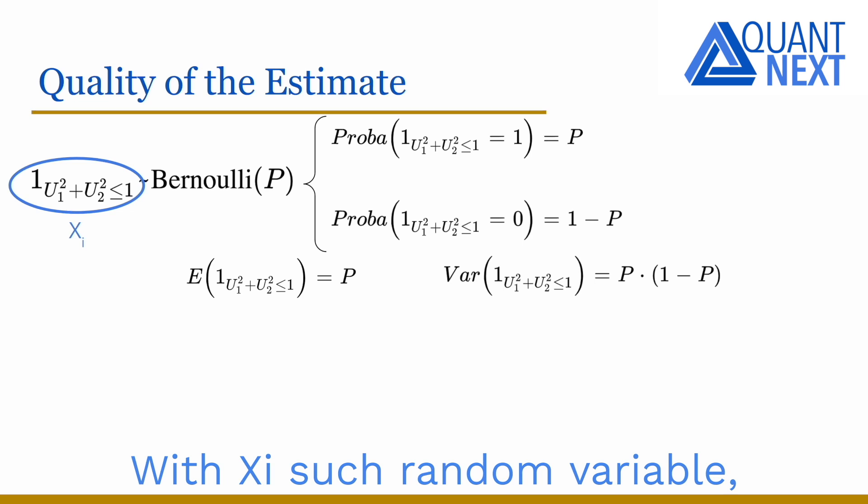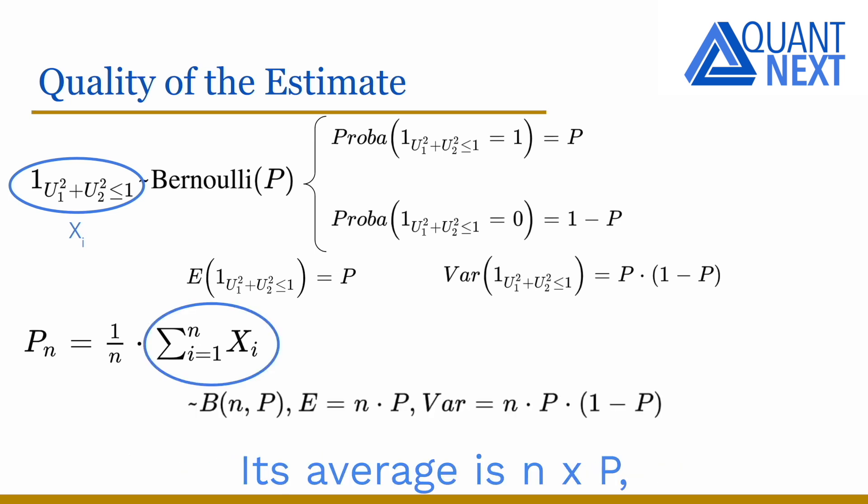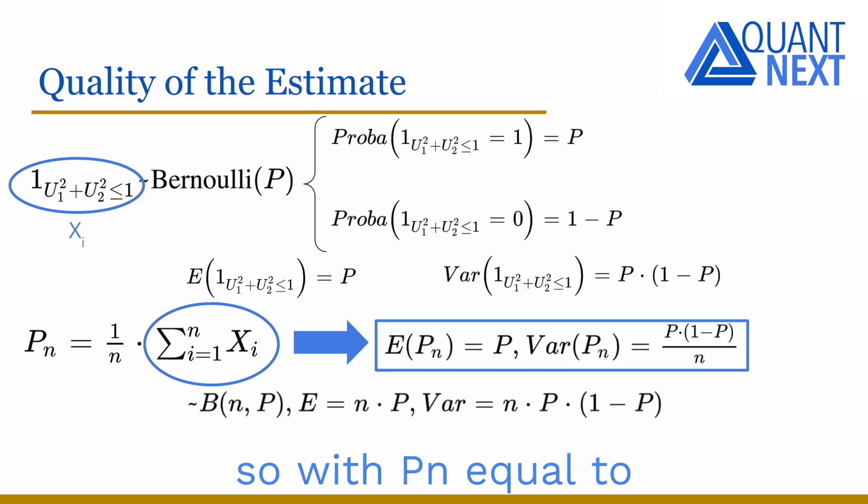Its expectation is equal to p while its variance is equal to p times one minus p. With xi such random variable, the sum of xi for i equal one to n follows a binomial distribution with parameters n and p. Its average is n times p while its variance is n times p times one minus p. So with pn equal to one divided by n times the sum, its expectation is equal to p while its variance is equal to p times one minus p divided by n.